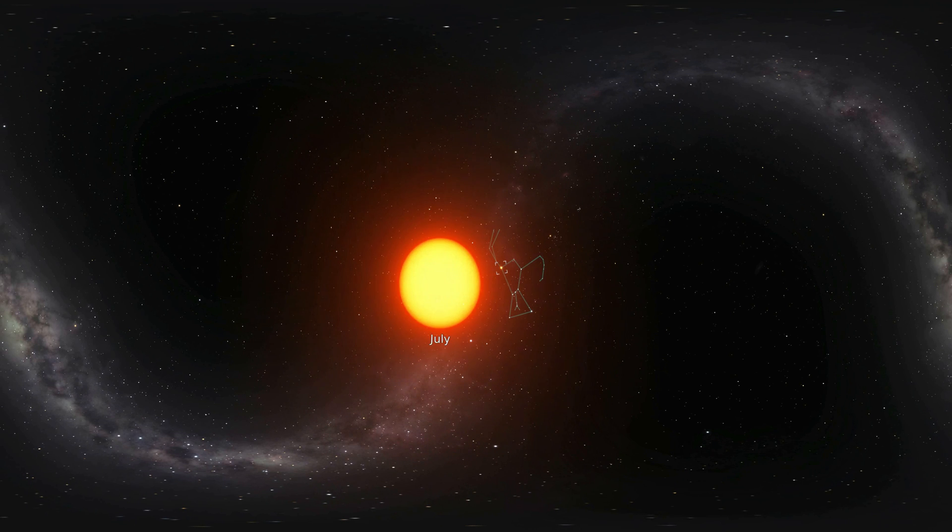While we wait, we can watch Betelgeuse pulsate on an 11-month timescale, first determined in 1836 by John Herschel, who was the son of William Herschel, the astronomer who discovered planet Uranus.